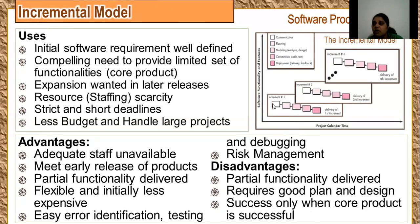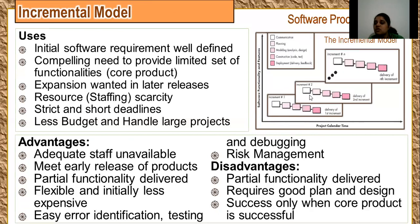When you deliver a core product, you find out which features are required by the client on an immediate basis — those are delivered in the core product. First, we do communication with the stakeholders, then planning and scheduling. Modeling means creating a pictorial representation for the client to understand. We then code and test, and deliver to the client taking feedback. After the product is successful, they give us an order for a second incremental delivery. As many features you have, that many increments you will release — though you can deliver more than one function per increment.